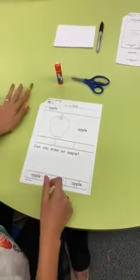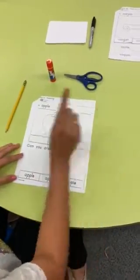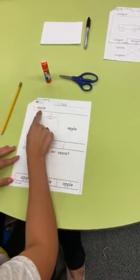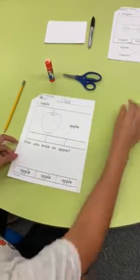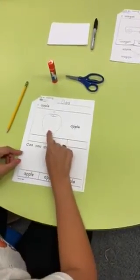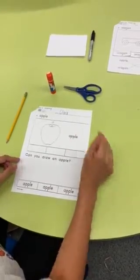Your child will read the first word at the very top where the asterisk is, 'apple,' and then they will notice the picture of the apple. Then they will cut out the bottom part.